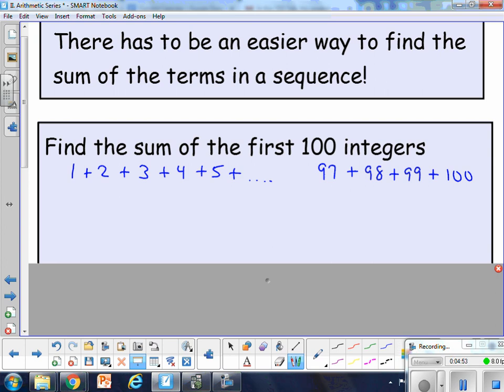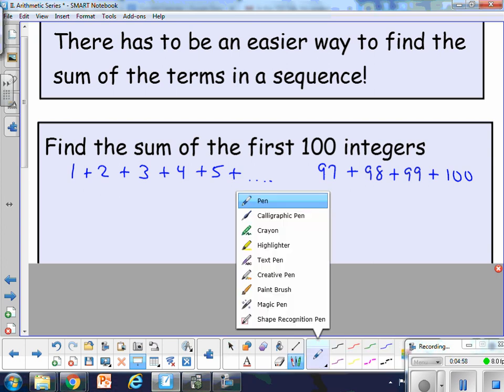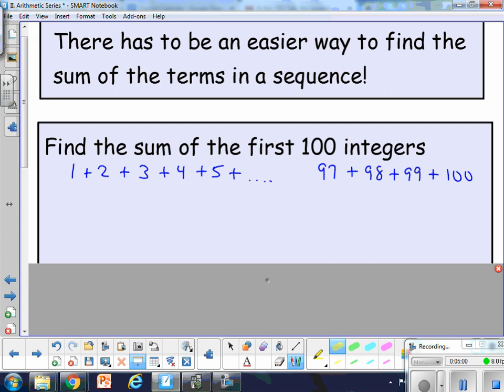But what Gauss realized, his little pattern was that there is something going on with thinking about it this way, think about the first term plus the last term. That's going to be 1 plus 100 is 101.